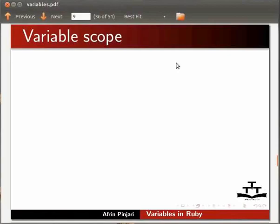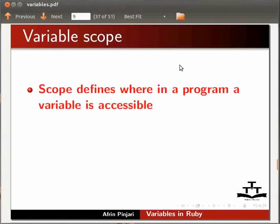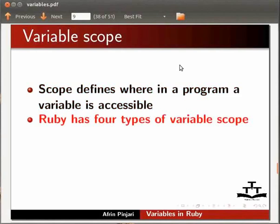We will now learn what is a variable scope. Scope defines where in a program a variable is accessible. Ruby has four types of variable scope: Local, Global, Instance and Class.